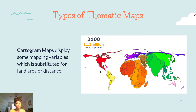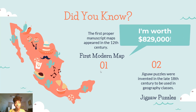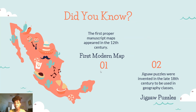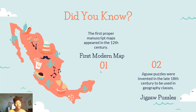Did you know that the first proper manuscript map appeared in the 12th century and that map is now worth $829,000? That is an expensive map! And did you know that jigsaw puzzles were invented in the late 18th century and were used in geography classes? They were actually maps, and students would have to place the puzzle pieces together to create a map. Isn't that interesting?